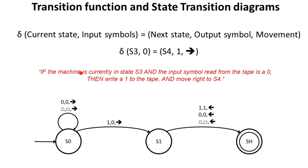In English it reads: if the machine is currently in state 3 and the input symbol read from the tape is 0, then write a 1 to the tape and move right to state 4.